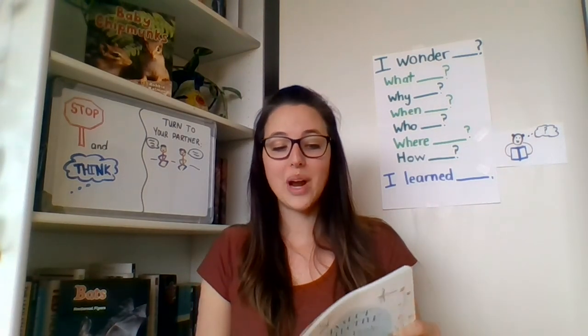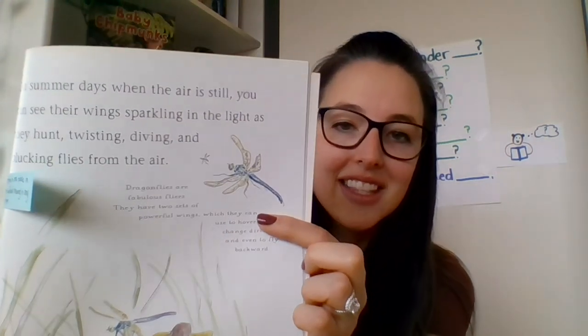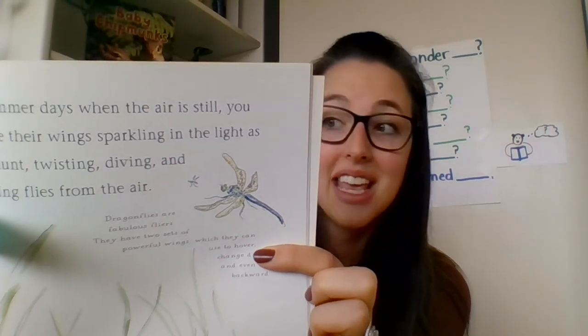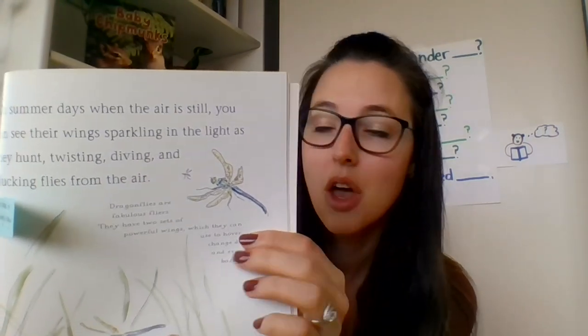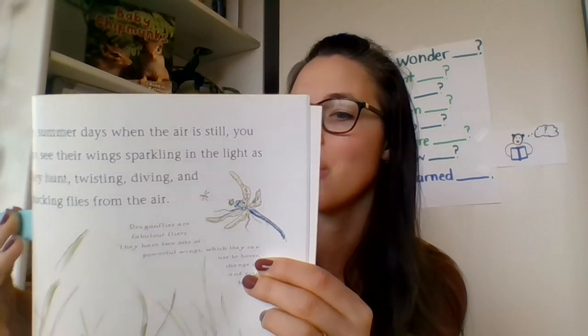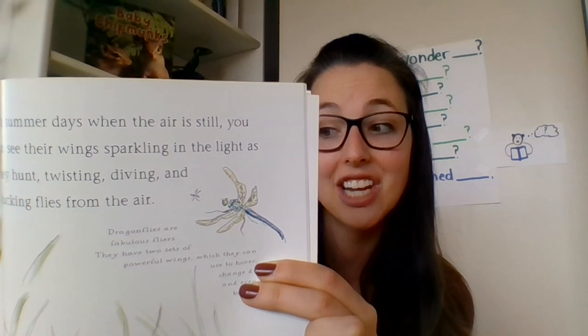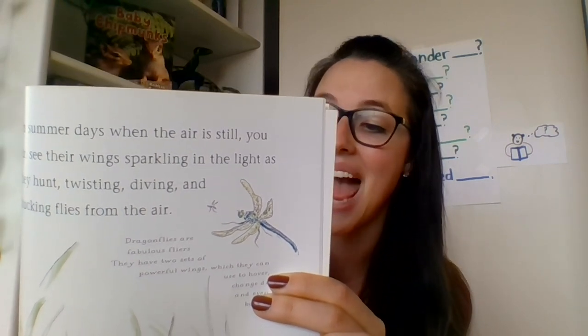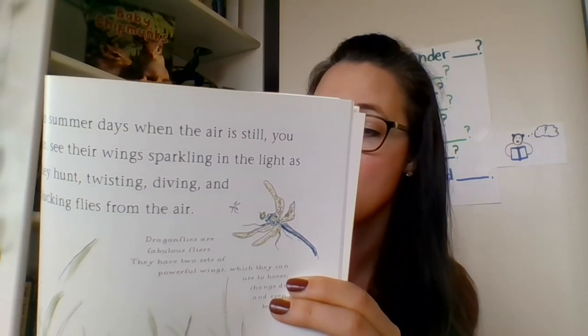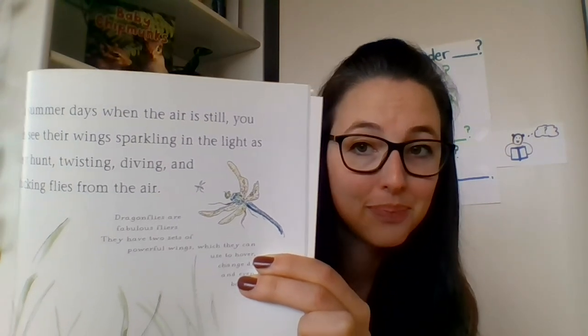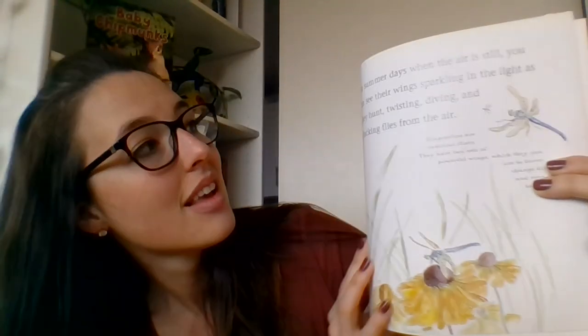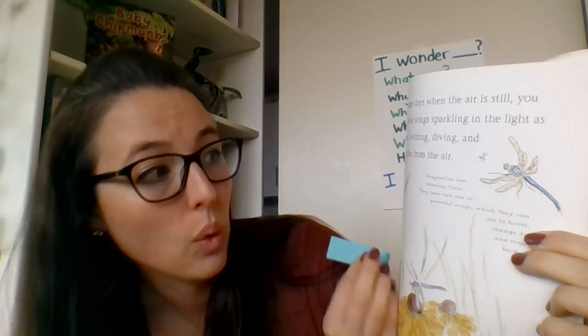Perhaps the greatest hunter of all is the dragonfly. Even the name sounds fierce. But don't worry, they won't come chasing after you. Dragonflies are much more interested in catching things like flies, mosquitoes, and gnats. Some will even snatch a spider from its web. On summer days when the air is still, you can see their wings sparkling in the light as they hunt — twisting, diving, and plucking flies from the air.